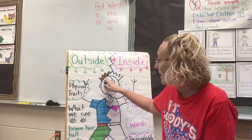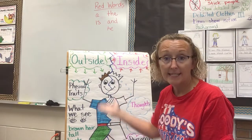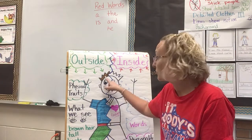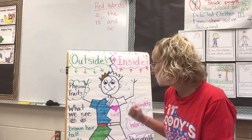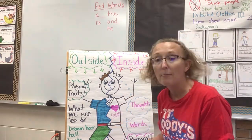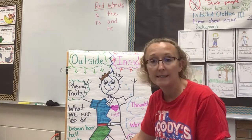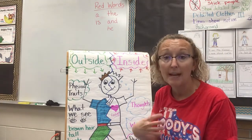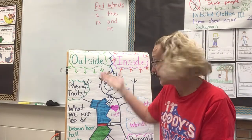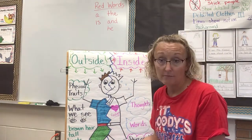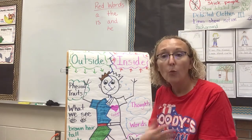So we could say this character has brown hair, a blue shirt, a red belt, green pants, and brown boots. We could say he's a boy, kind of tall, kind of skinny.